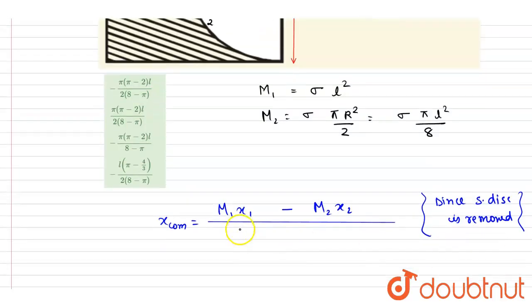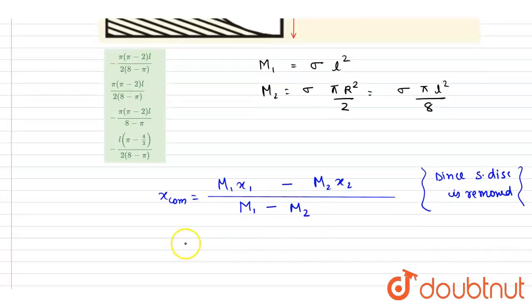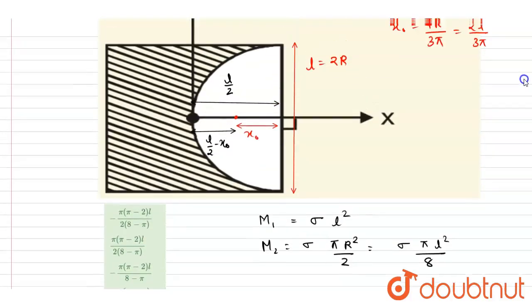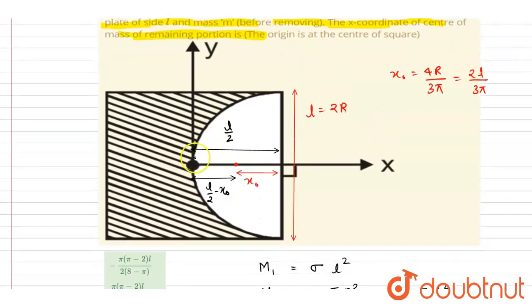Since the semicircular disc is removed, this will be equals to, if you see, the center of mass of the square is at origin itself from the symmetry, and we wrote here the center of mass of the disc lies at a distance of l by 2 minus x₀ from the origin.